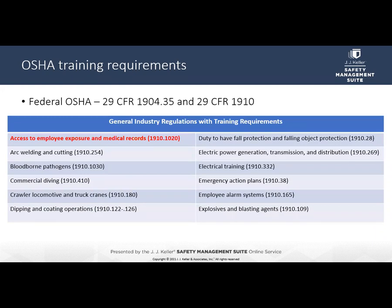The first place to look for training requirements is in the OSHA federal standards. This is the first of four slides listing general industry regulations with training requirements — well over 70 in total. While many regulations have training requirements, not all of them will apply to you. If the regulation doesn't apply to work your employees perform, you don't need to train on that topic. Access to employee exposure and medical records is highlighted as one important detail: per 1910.1020 paragraph G, when an employee first enters employment and annually thereafter, you must inform them of the existence, location, and availability of any employee exposure and medical records, who is responsible for maintaining them, and employees' rights of access to those records.